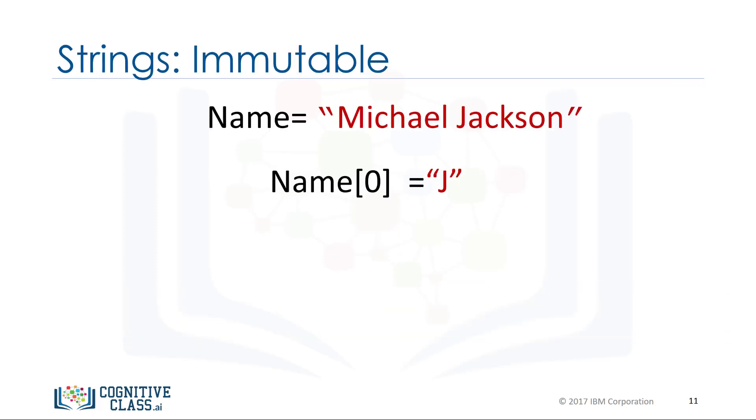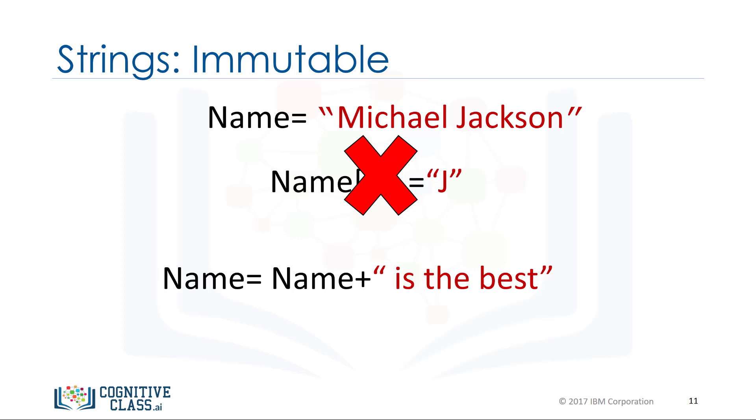This means you cannot change the value of the string, but you can create a new string. For example, you can create a new string by setting it to the original variable and concatenated with a new string. The result is a new string that changes from Michael Jackson to Michael Jackson is the best.